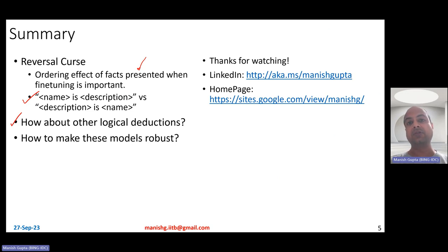And now this leads to other questions, like how about other logical deductions? So reversal curse is just one of those kind of logical deduction mechanisms. How about other logical deductions? Do they hold really well for large language models? And then, of course, the most important question, how to make these models robust? This just does not make sense. Reversal curse, such a simple logical deduction, if LLMs can't handle even such a simple logical deduction, then how can they be expected to handle even more complicated ones? How do you make LLMs be robust enough to be able to handle such logical deductions? That's it. Thank you for watching. Hope you liked the video. Connect with me on my LinkedIn or look at my research on my homepage. Thank you.